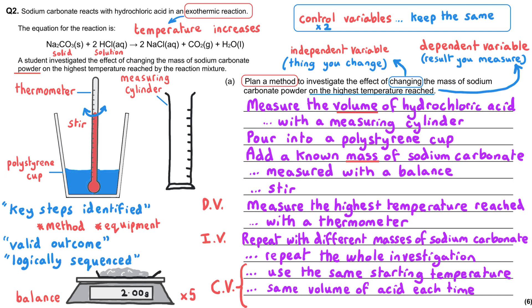Second, use the same volume of acid each time, because a different — for instance higher — volume of acid would cause a different, probably higher, temperature change. Third, use the same concentration of acid each time, because a more concentrated acid solution is likely to give a higher temperature change.